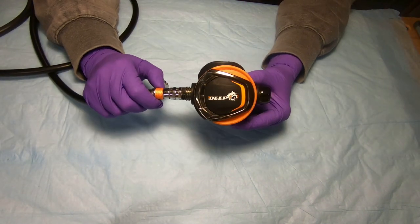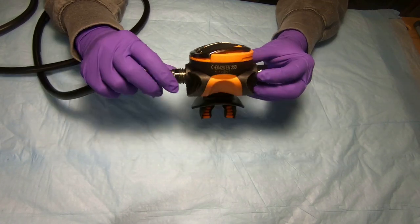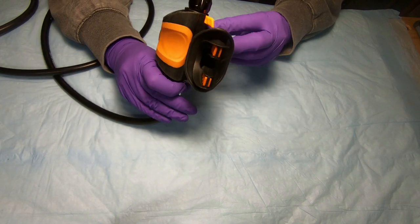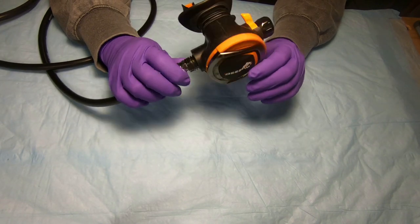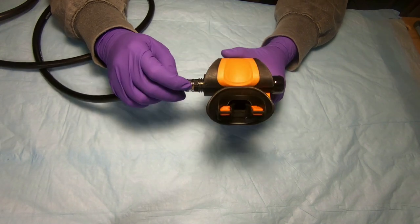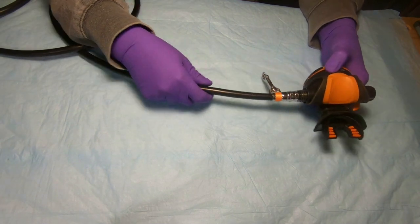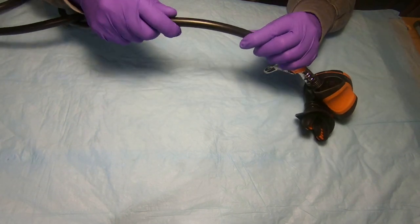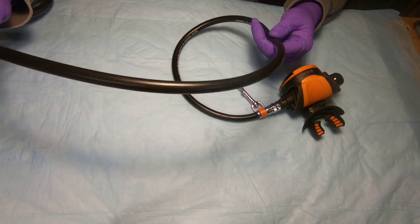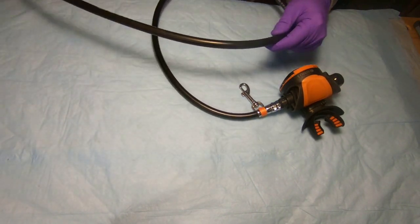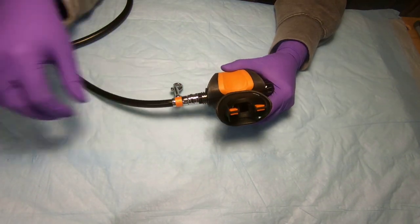We should get started. First of all I'm gonna disconnect it from the hose. Before doing that I'm gonna inspect the regulator and see if there's any visible cracks, damage, or dirt. Everything looks okay. Then I will inspect the hose to make sure there's no bulging or cracking. It looks okay.